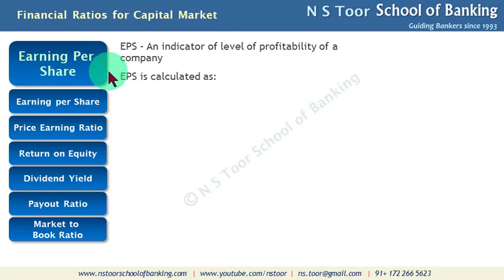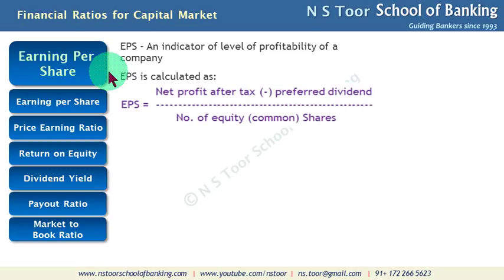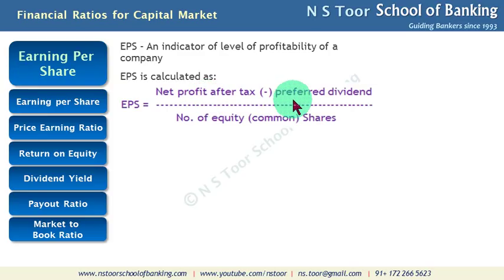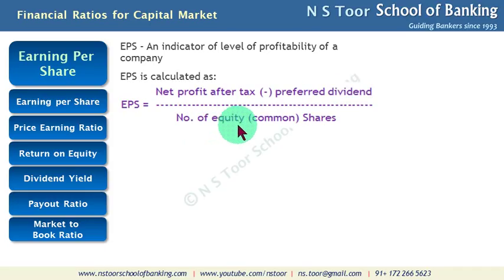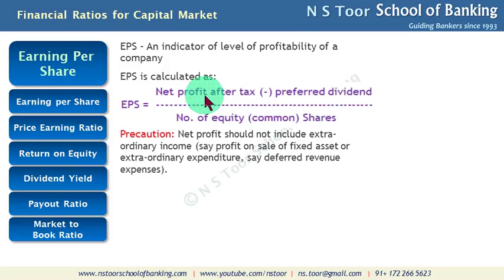How is this ratio calculated? The ratio is calculated using the following variables. To calculate the ratio, we need net profit after tax, the dividend paid on preference shares, and the number of equity or common shares. This information is required to calculate this ratio, and certain precautions also have to be taken.